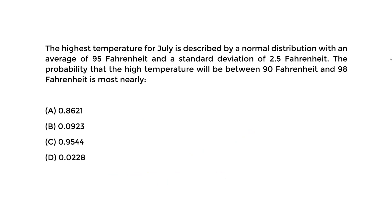Now we have a quick example looking at normal distribution. We will use a normal distribution to determine the probability. The highest temperature for July is described by a normal distribution with an average of 95 degrees Fahrenheit and a standard deviation of 2.5 Fahrenheit. We're told the probability that the high temperature will be between 90 Fahrenheit and 98 Fahrenheit is most nearly what?